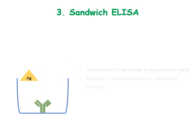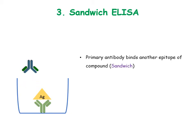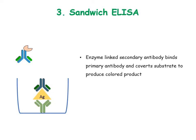Sandwich ELISA is a little different. In this, instead of the compound, an antibody is fixed to the plate. Now the compound is added — if the antibody-specific compound is present, it will bind to the antibody. Primary antibody is then added, which binds another epitope of the compound to form a sandwich, and a wash is given. Enzyme-linked secondary antibody is added which binds to the primary antibody, followed by another wash. Finally, the substrate is added, which is converted into the colored product and detected by the detector.